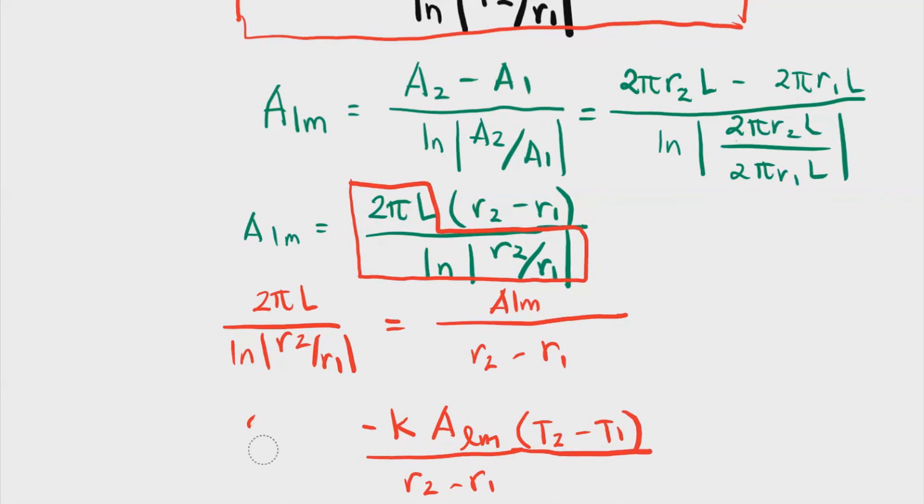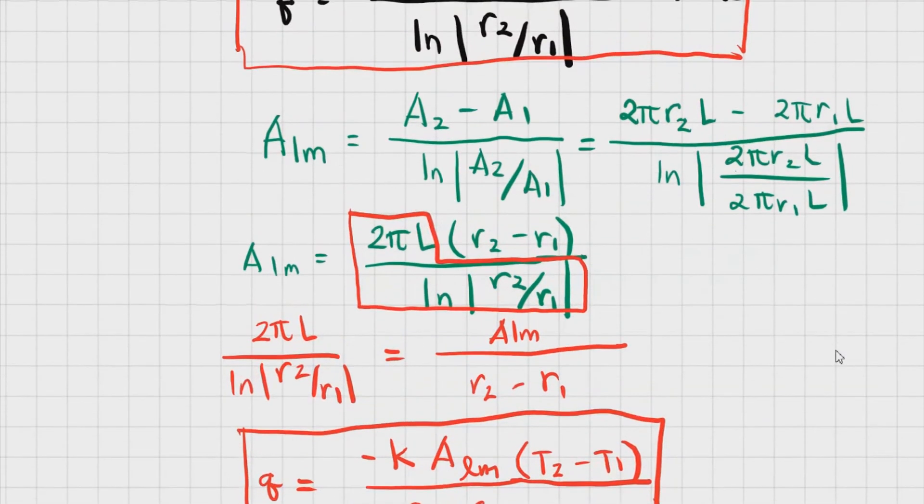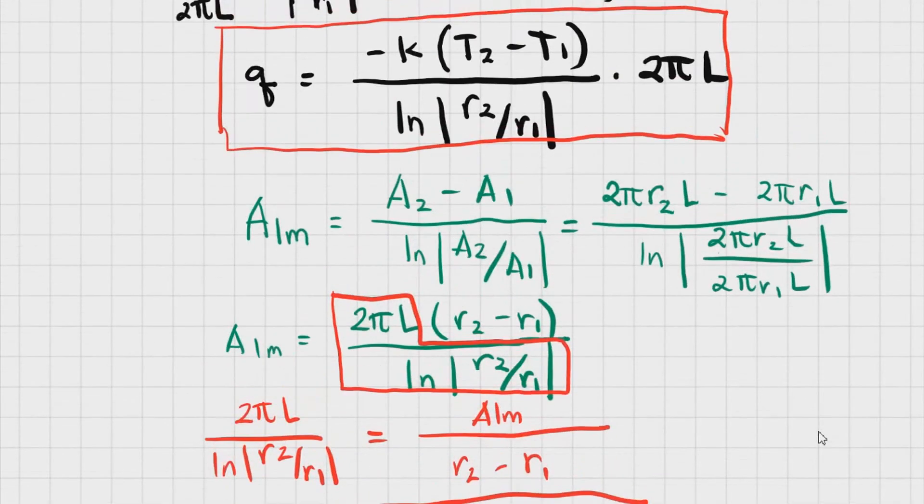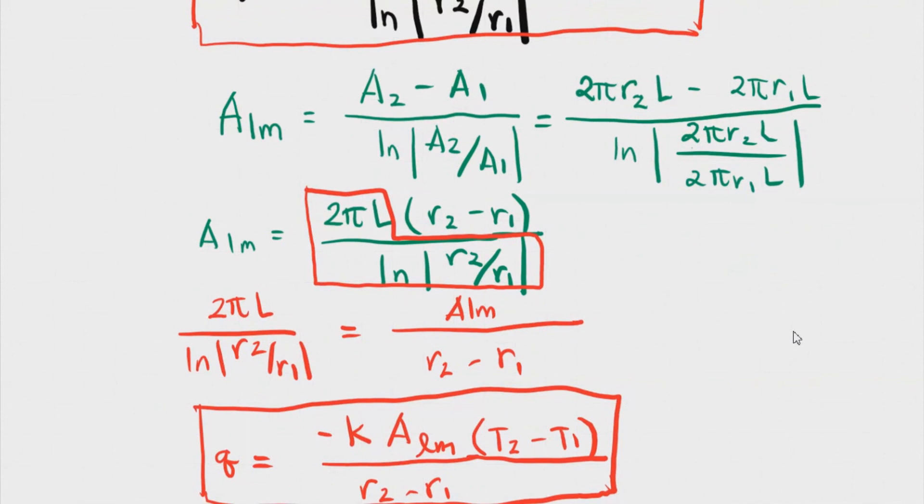So let's box this. So that's it. So as you can see now, we have another equation. This equation is the same as our boxed one. Okay? So that's our equation to find the heat rate for a given conduction through hollow cylinder.